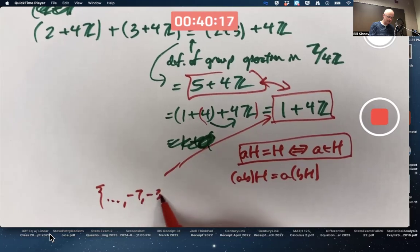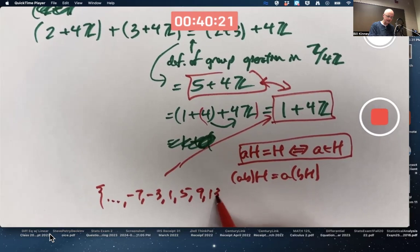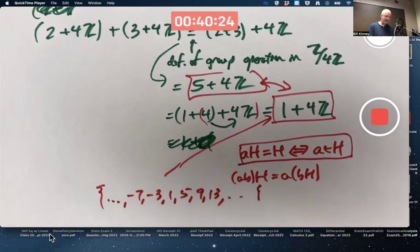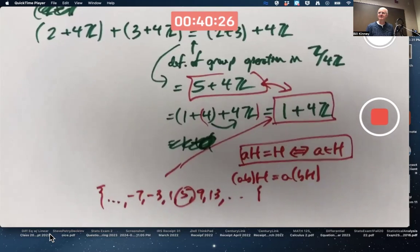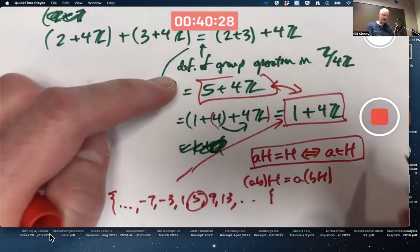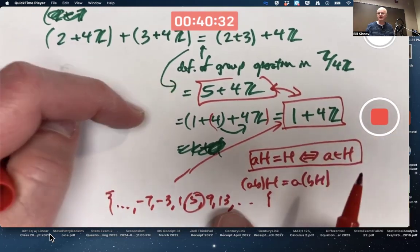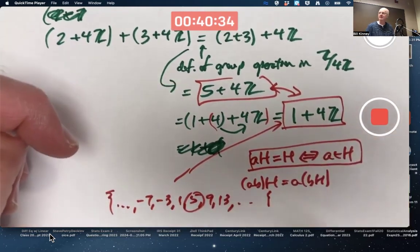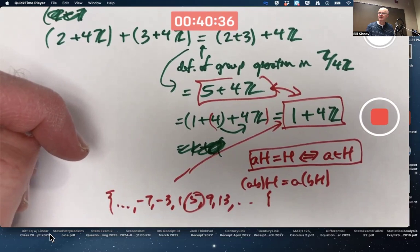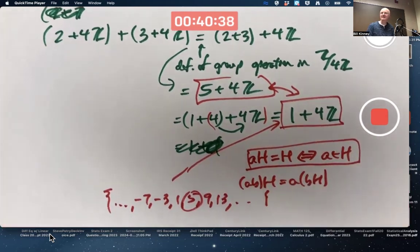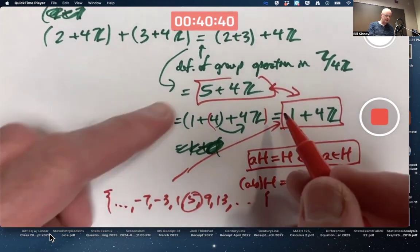So that would include negative 7, negative 3, positive 1, positive 5, positive 9, positive 13, etc. And that set does include 5. So either 5 or 1 could be thought of as representatives for this coset. So could 9, so could 13, so could negative 3, so could negative 7.